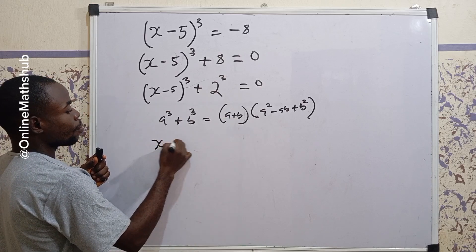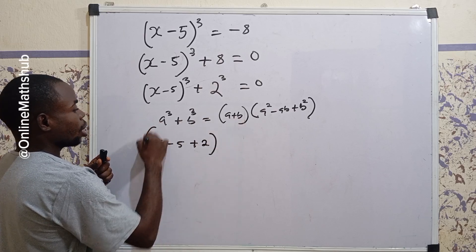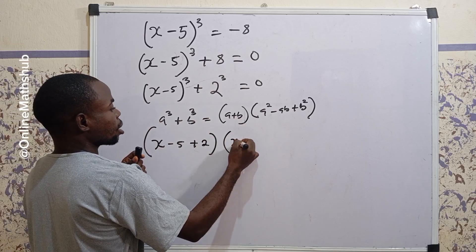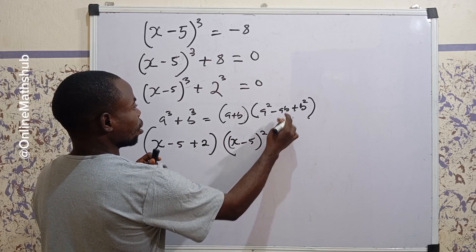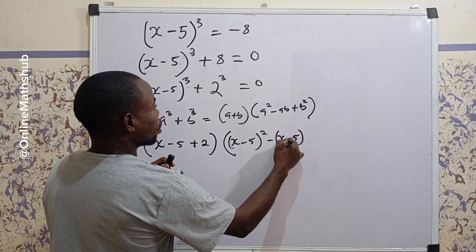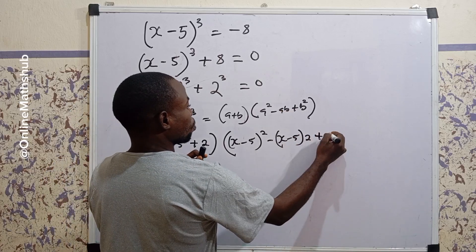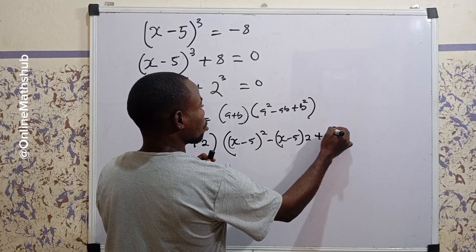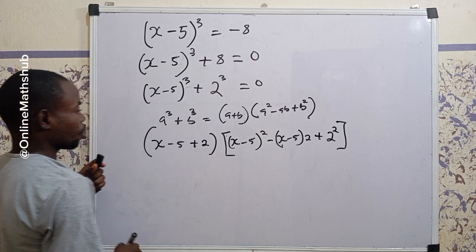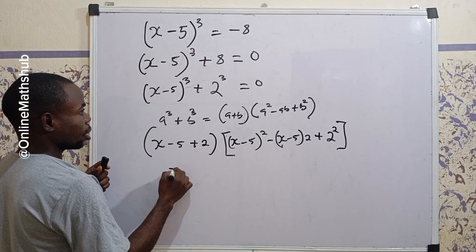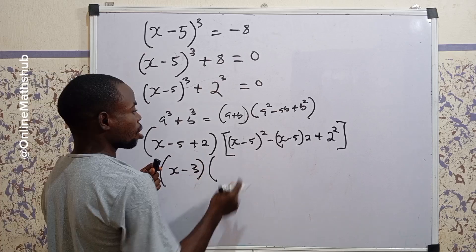So expanding, the first factor is (x minus 5) plus 2, which gives us (x minus 3). The second factor is (x minus 5) squared, minus (x minus 5) times 2, plus 2 squared — all in brackets.